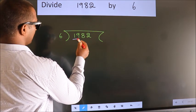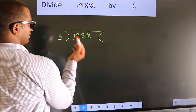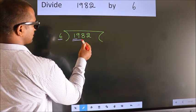Here we have 1. Here 6. 1 smaller than 6. So we should take 2 numbers. 19.